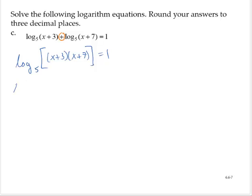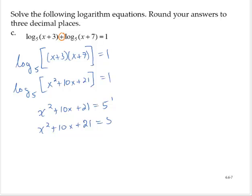Simplifying inside, log base 5, that would be x squared plus 10x plus 21. Let's rewrite this in the exponential form. x squared plus 10x plus 21 is equal to 5 to the first. So then x squared plus 10x plus 21 is equal to 5.